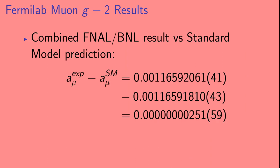So how does this combined result compare to the standard model prediction? The difference between this combined result and the SM prediction is a bit smaller than the difference between the previous Brookhaven result and the standard model, but the uncertainty is reduced. With this reduction in uncertainty, the difference between this new combined result is 4.2 sigma.